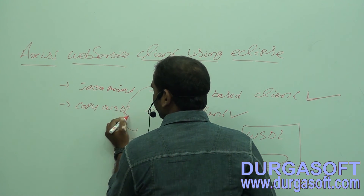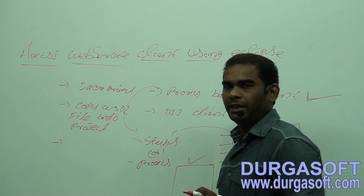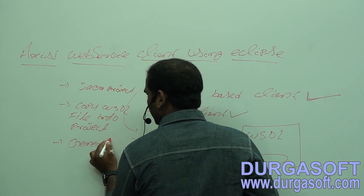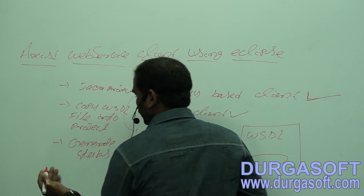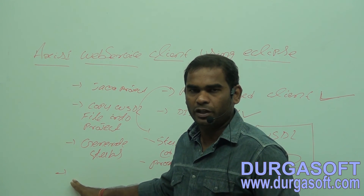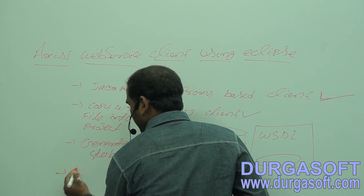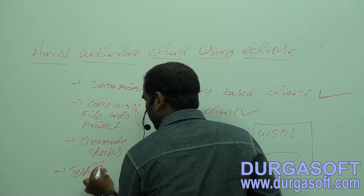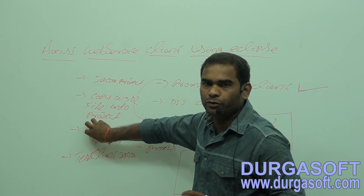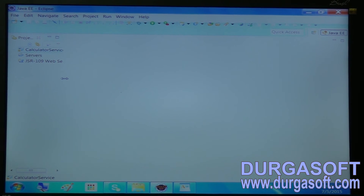After copying the WSDL file into the Java project, the third step is to generate stubs or proxies. After generating stubs, the fourth step is to create a TestClient.java with a main method. Inside that main method, you can use the generated stubs to invoke the web services. Now we will create an Axis1 web service client in Eclipse.